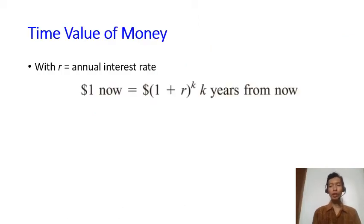The concept of time value of money says that if you have one dollar now, it is equal to one plus r to the power of k, k years from now, with r as the annual interest rate.